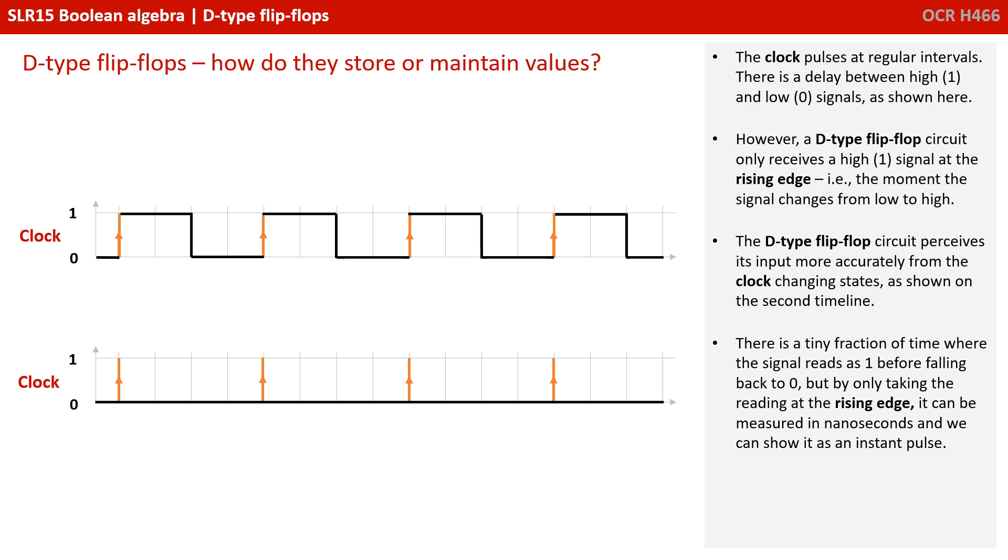There is a tiny fraction of time where the signal reads as 1 before falling back to 0, but by only taking the reading at the rising edge, it can be measured in nanoseconds, and so we can show it effectively as an instant and regular pulse or heartbeat.